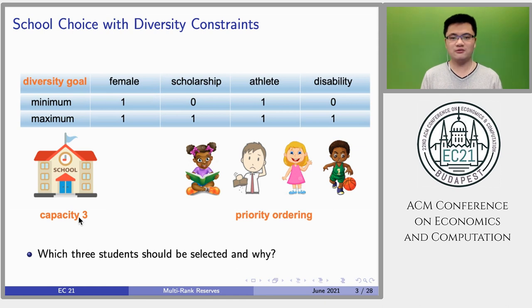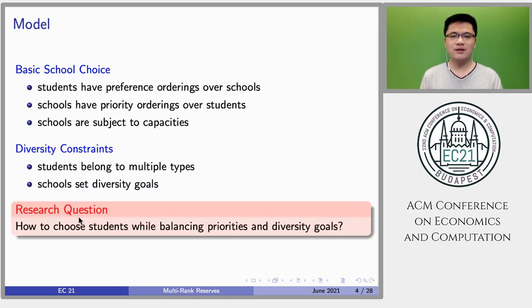What if the school sets some diversity goals, such as admitting at least one girl and one athlete, but no more than one student for each type? Under these diversity constraints, which three students should be chosen and why?